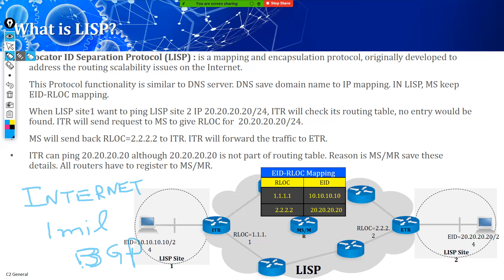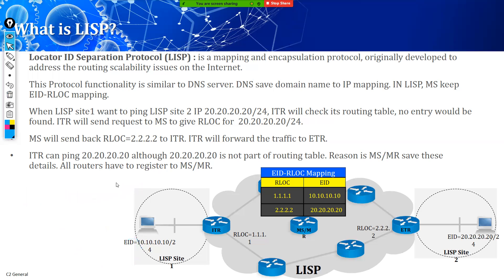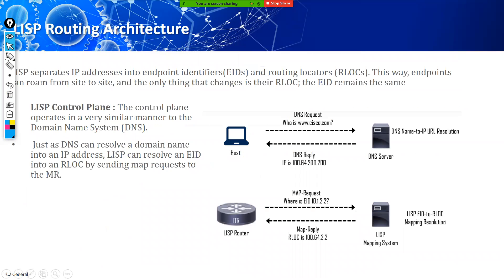LISP is similar to a DNS server concept or route reflector. For DNS, we send a URL and as a result we get the IP address. In LISP, we send an endpoint IP and want to find which router has that endpoint. The LISP mapping tells us that this endpoint belongs to this router.